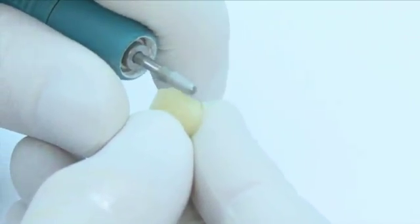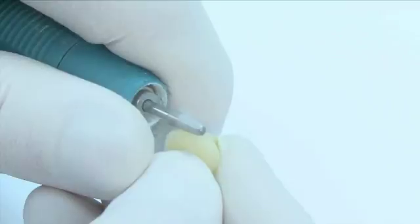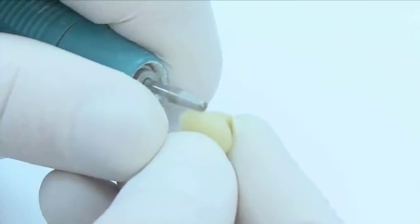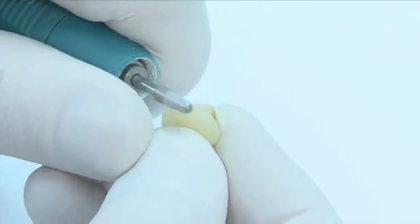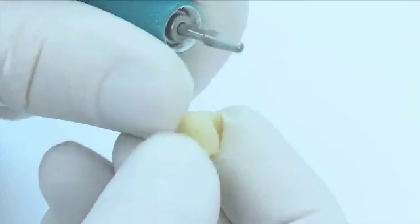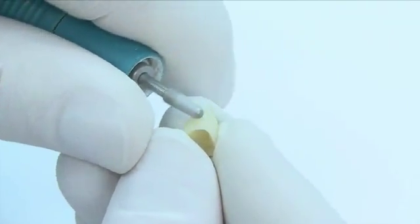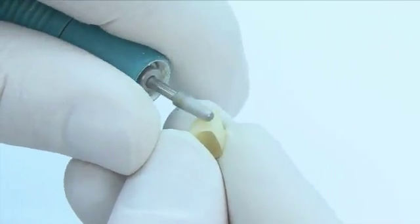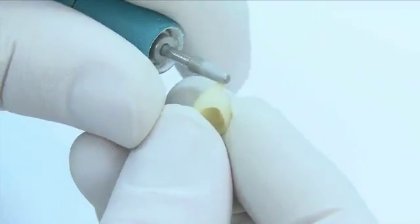After milling is complete, use a center diamond burr at a low speed to smooth out the sprue attachment point and any other surface irregularities. Minor adjustments to proximal contact points and any contour adjustments may also be made at this stage.